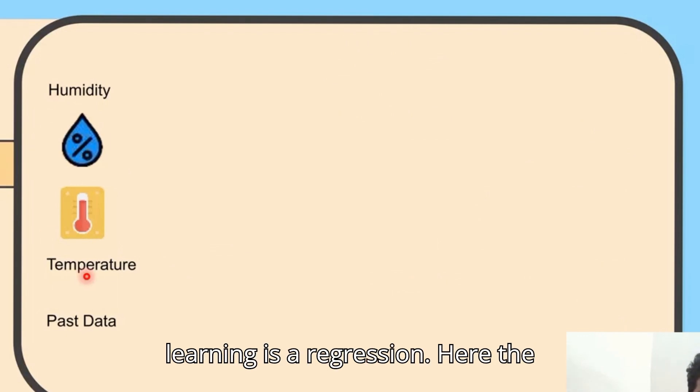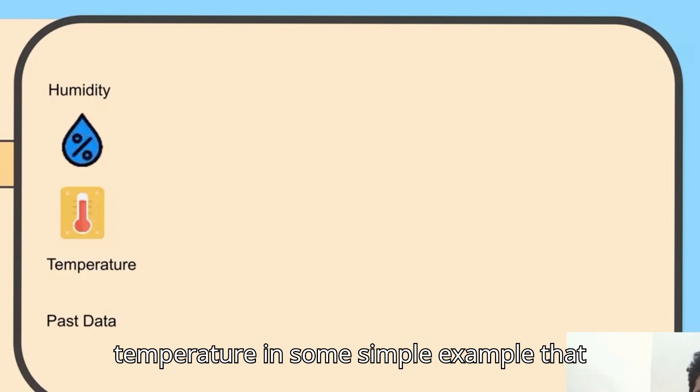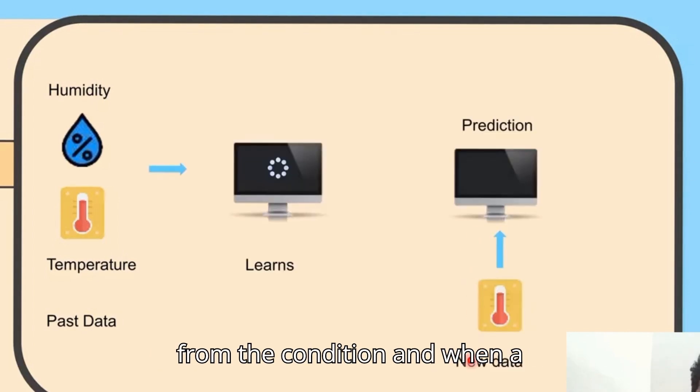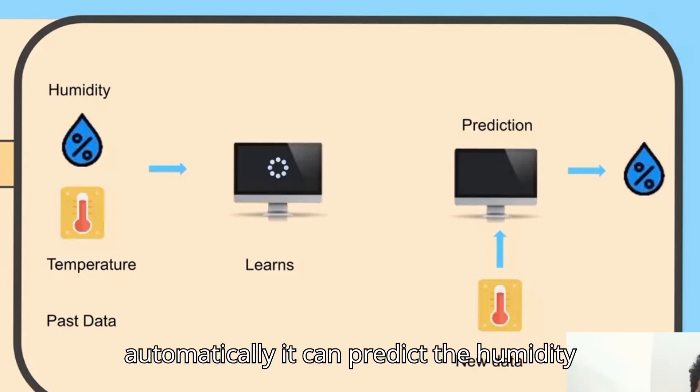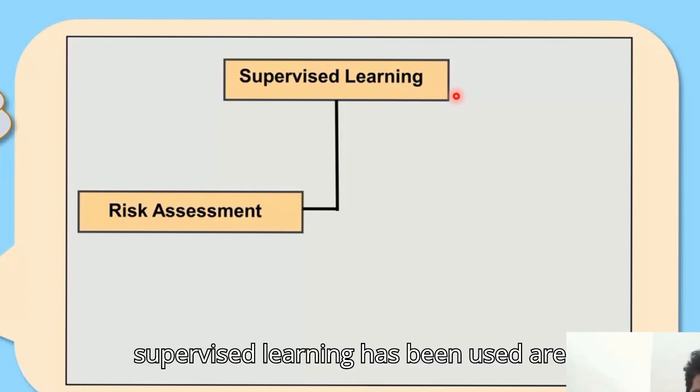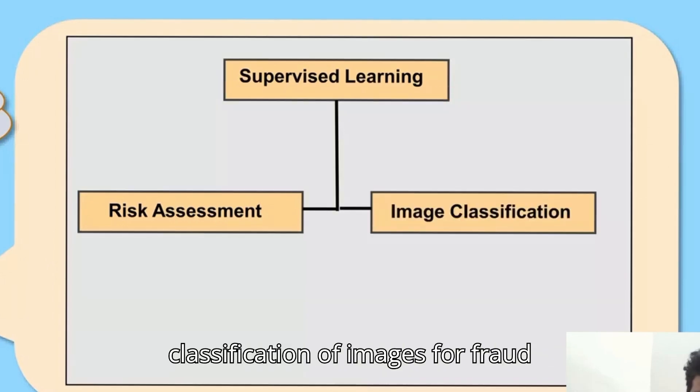The second type of supervised learning is regression. Here, temperature is a simple example that keeps on changing. The system learns from the condition, and when new temperature is provided, it can automatically predict the humidity level. The main domains where supervised learning is used are risk assessment techniques and classification of images.